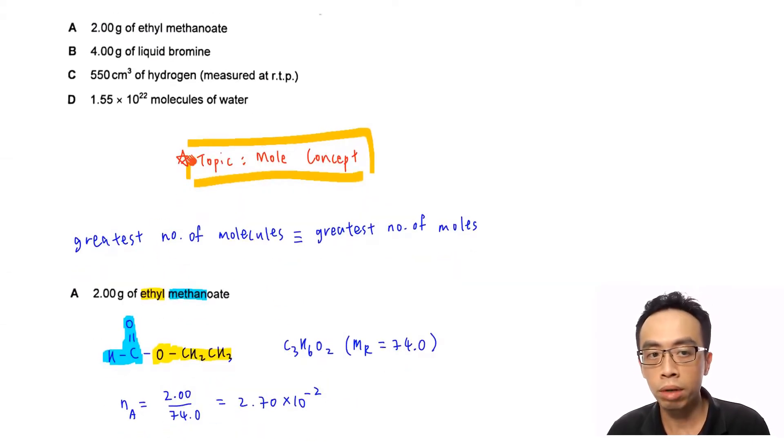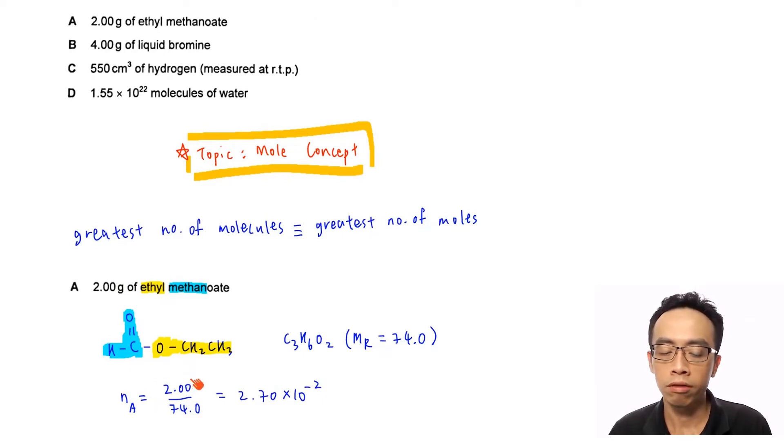So, let's run through option A, 2.00g of ethyl methanoate. We do need to be able to draw out this ester, ethyl methanoate. The acid portion will be methanoic acid, 1 carbon acid. And the alcohol portion will be your ethyl group. So this is the structure for your ester, ethyl methanoate. The molecular formula will be C₃H₆O₂. So we can work out the molar mass, which is 74.0. Once we have the molar mass, I can determine the number of moles for A. The number of moles will be mass in gram over molar mass, 2.00 divided by 74.0. The number of moles for option A will be 2.70 × 10⁻².